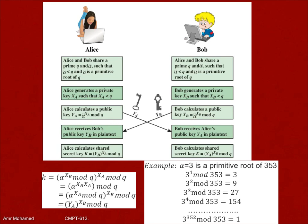That's the theory on which Diffie-Hellman is based. The mechanism works by trying to exchange a common number between Alice and Bob, such that anyone in between will not be able to know the value of this key. The idea is very simple — notice the difference with RSA.